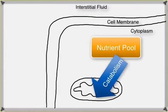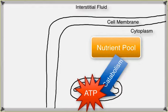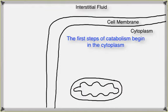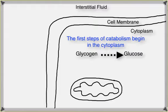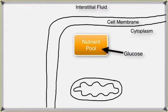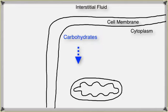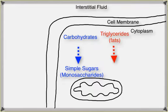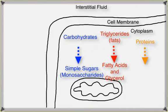Catabolism is the process of breaking down organic substances. This process releases energy that can be used to synthesize ATP. The first steps occur in the cytoplasm, where larger organic molecules like glycogen are broken down into smaller ones like glucose. Carbohydrates break down into simple sugars or monosaccharides; triglycerides or fats are broken down into fatty acids and glycerol; and proteins are broken down into amino acids. These smaller molecules can continue to be broken down and absorbed by the mitochondria.